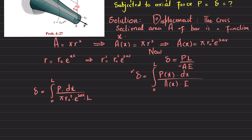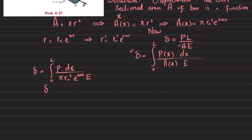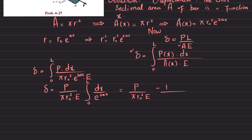Substituting A(x) = π·r₀²·e^(2ax), the integral becomes: ∫₀ᴸ P·dx / (π·r₀²·e^(2ax)·E). Since P, π·r₀², and E are all constants, we take them outside the integral, leaving: P / (π·r₀²·E) · ∫₀ᴸ e^(-2ax)·dx.